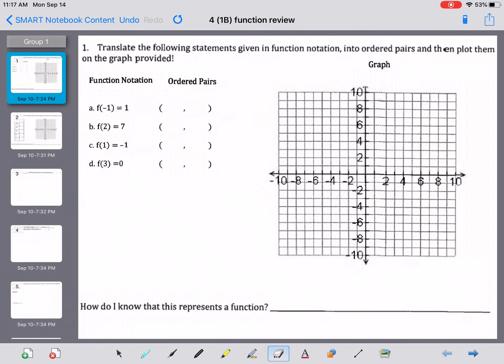So let's take a look at problem number one. It says translate the following statements given in function notation into ordered pairs and then plot them on the graph provided.